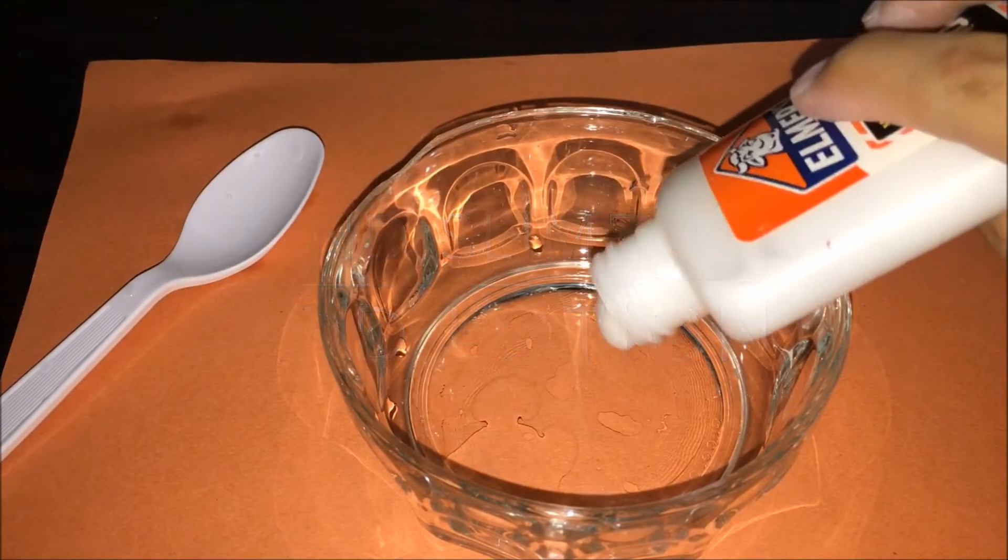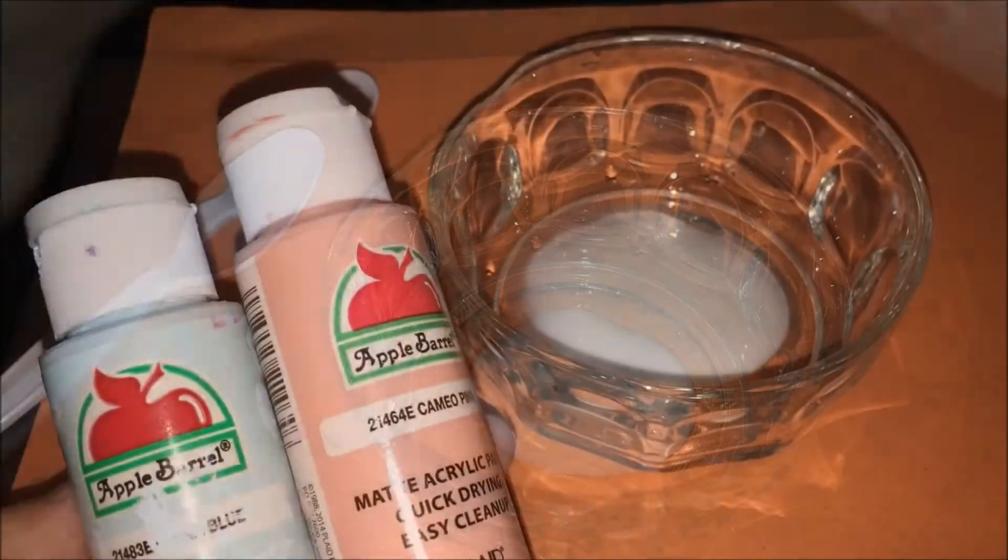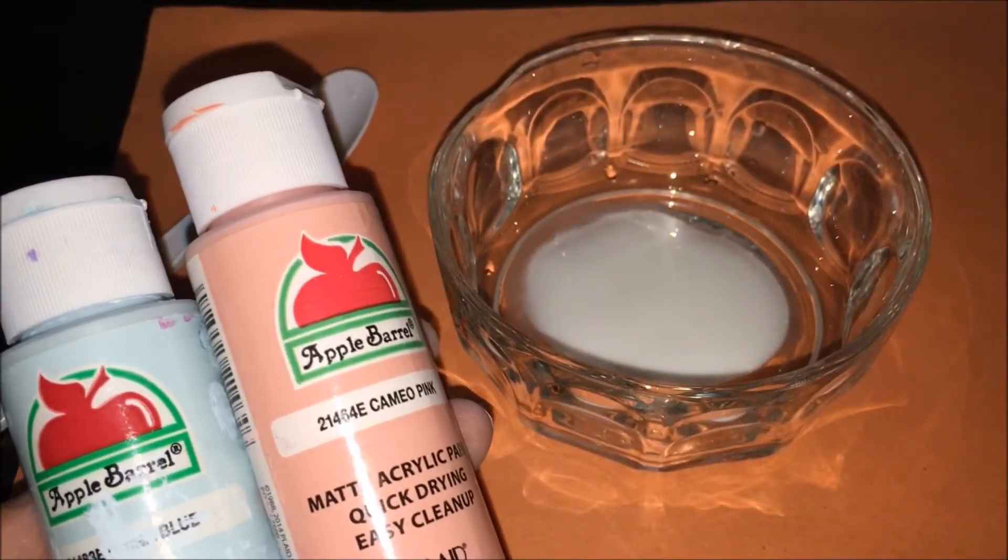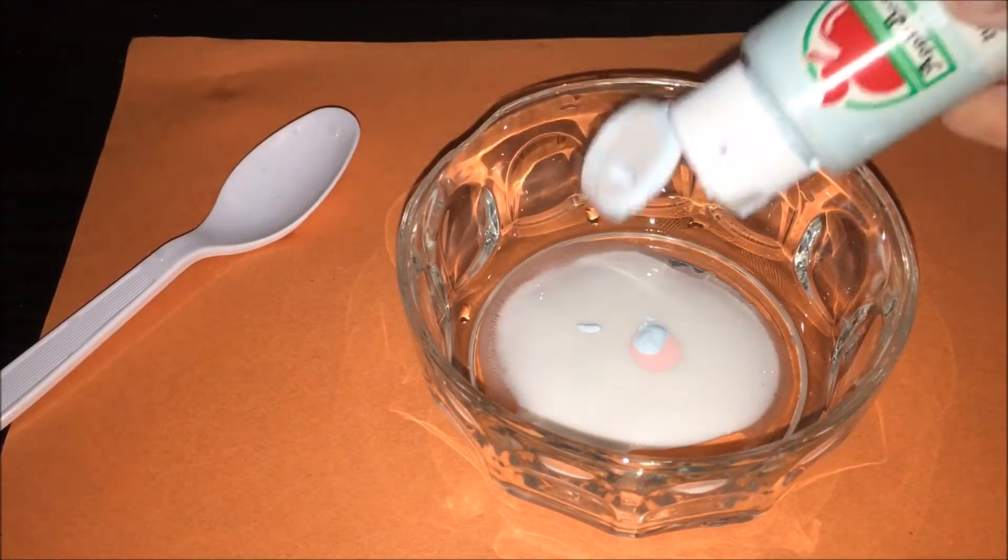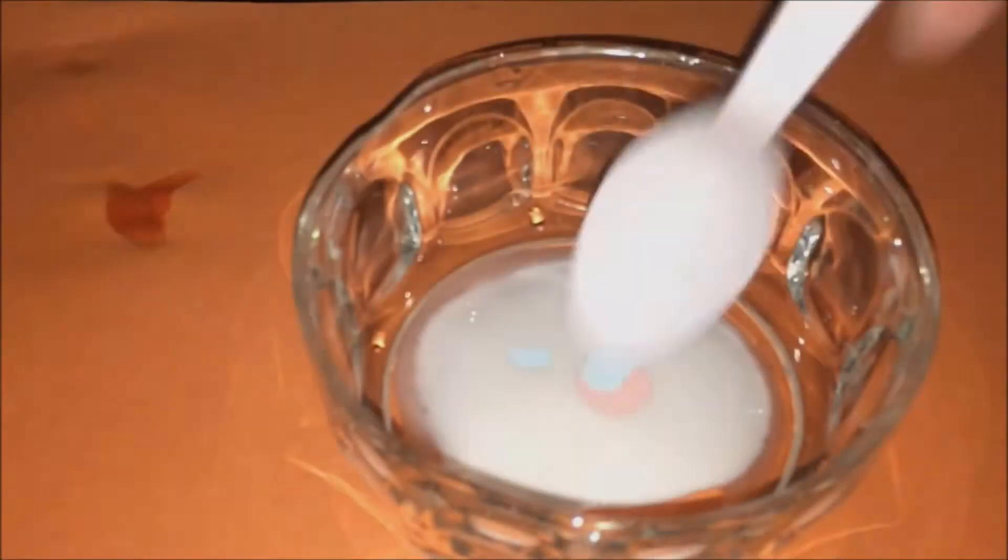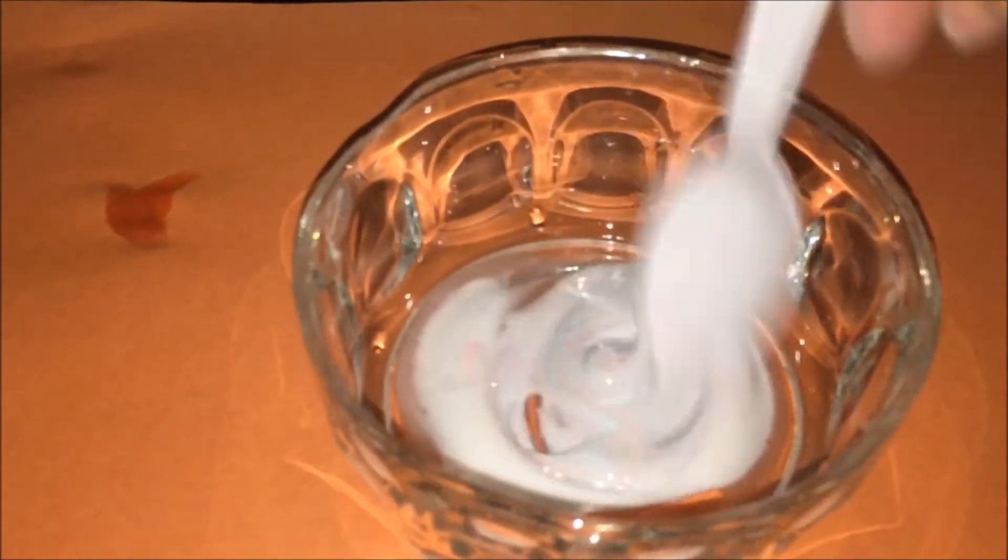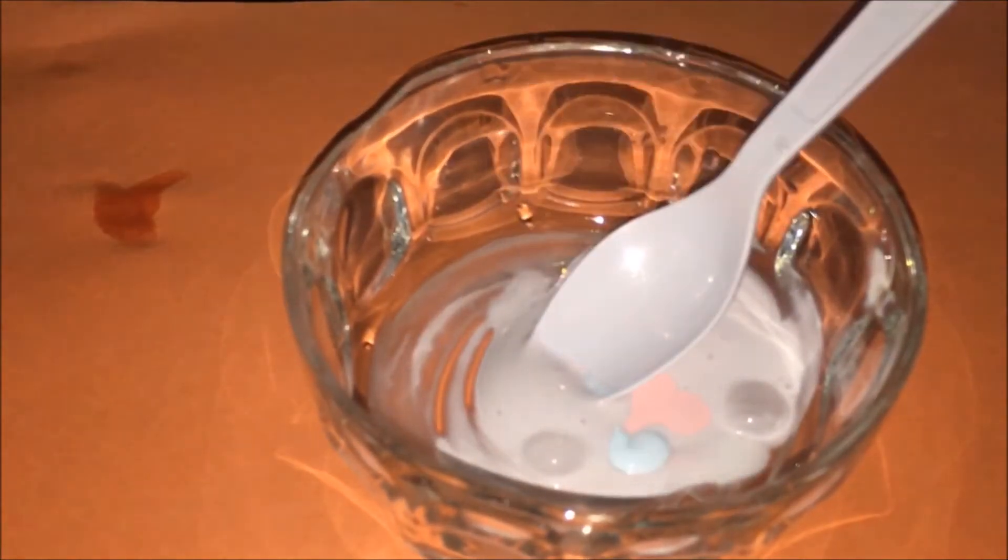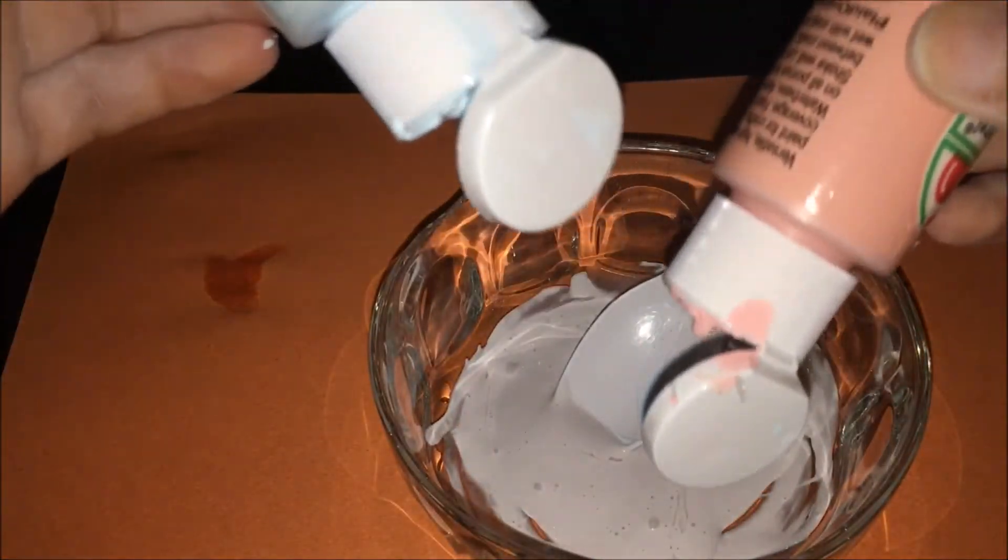For the second slime you will need to add lotion. The first thing you'll need to do is add glue as we did for the first slime. Add your paint or food coloring. I chose lightish pink and baby blue color to make purple. Just mix all that up until I got the color that I wanted.